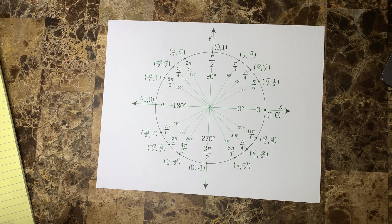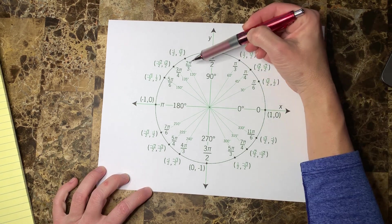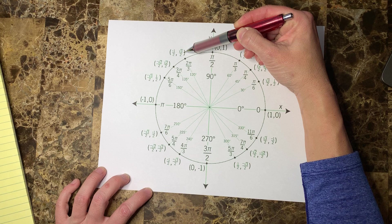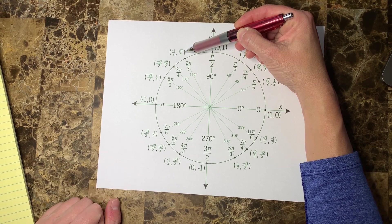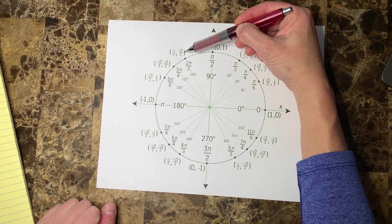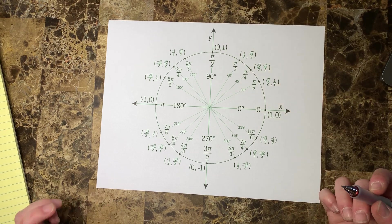Let's say I asked for the sine of 2π/3. So you go to 2π/3, the sine is the y value, and you would say okay well that's √3/2.